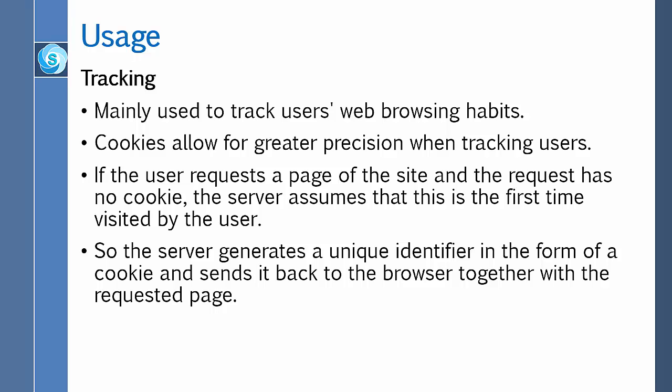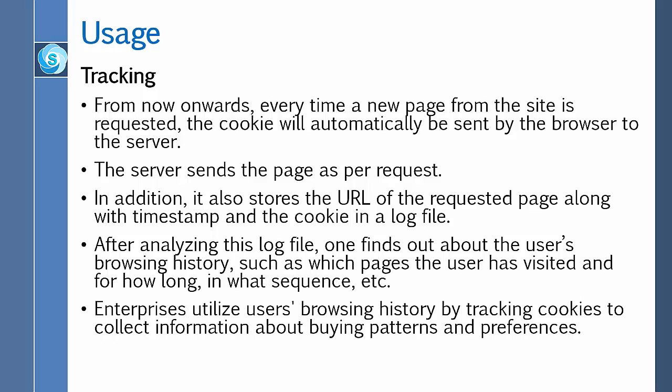Now let me talk about tracking. It is mainly used to track users' web browsing habits. Cookies allow for greater precision when tracking users. If the user requests a page and the request has no cookie, the server assumes this is the first time visited by the user, so the server generates a unique identifier in the form of a cookie and sends this back to the browser with the requested page. From now onwards, every time a new page from the site is requested, the cookie will automatically be sent by the browser to the server. The server also stores the URL of the requested page along with a timestamp and the cookie in a log file. After analyzing this log file, one finds out about the user's browsing history, such as pages visited, for how long, in what sequence, etc. Enterprises utilize users' browsing history via tracking cookies to collect information about buying patterns and preferences.